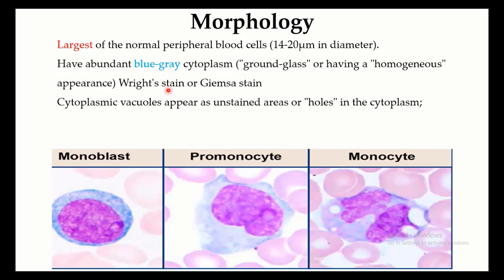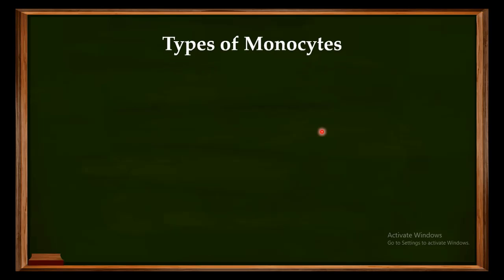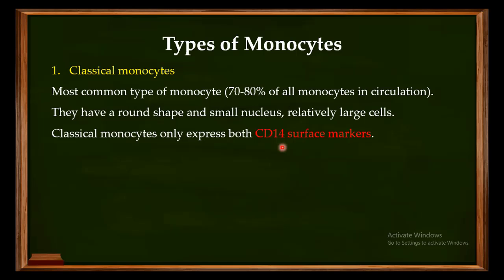Monocytes are extremely motile, so you can see pseudopods when examining their morphology, and the nucleus is kidney-bean shaped. Regarding types of monocytes, one classification identifies classical monocytes as the most abundant of the circulating monocytes, and they have specific surface receptors known as CD14.